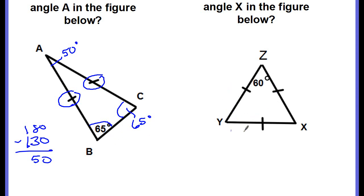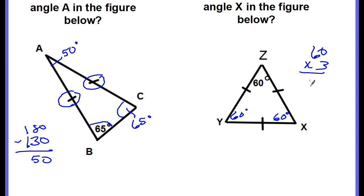Now, if you look at our next example, you'll see that there's a tick mark on all three sides. That means it is an equilateral triangle — all the sides are equal. And if all the sides are equal, that means all the angles are equal. So if angle Z measures 60 degrees, that means Y is also 60 degrees and X is 60 degrees. You could multiply 60 times 3, and it shows that it adds up to 180 degrees. So there are ways — sometimes you'll be missing more than one angle, and you have to look for clues. Like here, we needed to know that two sides were congruent, so the two angles were congruent. Here, it was an equilateral triangle: all sides equal means all angles equal.